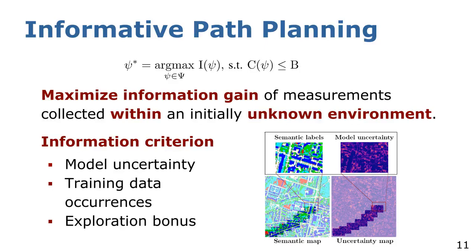To this end, we plan paths maximizing model uncertainties stored in the global map. Further, we normalize the model uncertainties by counting how often a pixel measurement already occurs in the training dataset to foster training data diversity. Last, we assign an exploration bonus to not-yet-visited terrain areas.